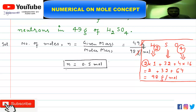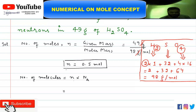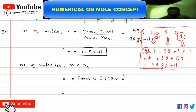Now we have to calculate the number of molecules. According to the mole concept, the number of molecules equals the number of moles multiplied by Avogadro's number. So that is 0.5 moles multiplied by 6.022×10²³. This gives us the number of molecules in 49 grams of sulfuric acid.